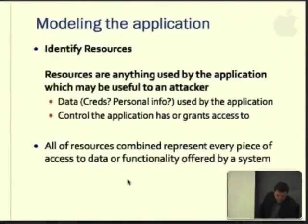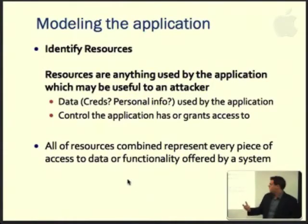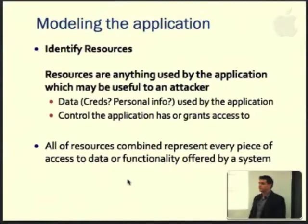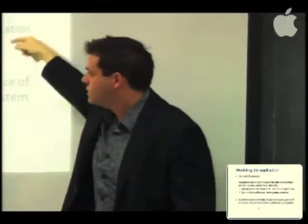From there, you go on to modeling the application. You've seen some pieces of the information — so it does this action for a user. What are the resources that user is using the application for? Think of resources as anything an attacker would be interested in. Maybe this application stores data in a database with credit card numbers — that's an interesting resource. What's the control the application gives you access to? Think of Stuxnet — that didn't give anybody access to data, it gave them access to control of valuable systems. Think of resources as anything valuable to an adversary.